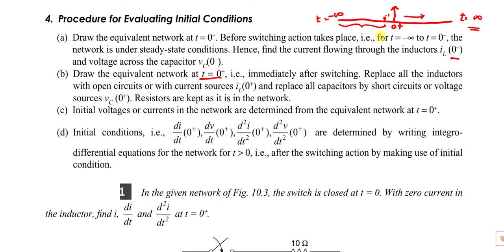At t = 0⁺, immediately after switching, you have to replace all inductors with open circuit if there is no initial current, or replace with a current source if there is an initial current in the inductor. Replace all capacitors with short circuit if there is no initial voltage, or replace with a voltage source of value V₀ if there is an initial voltage in the capacitor. Resistors are kept as they are — resistors behave as resistors only; they are not storage elements. Only inductors and capacitors are storage elements. Third step: initial voltages and currents in the network are determined from the equivalent circuit at t = 0⁺.